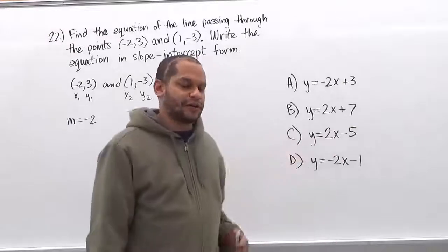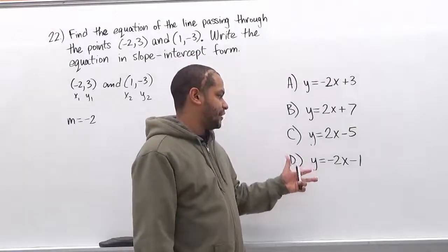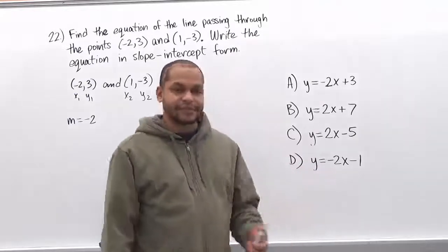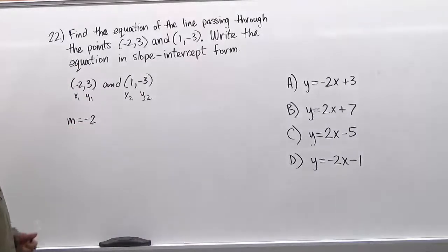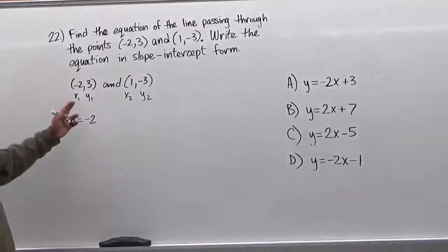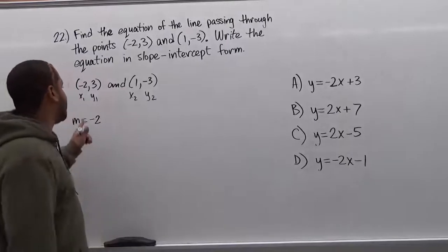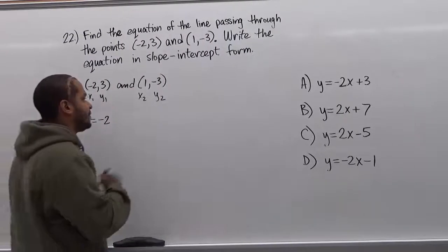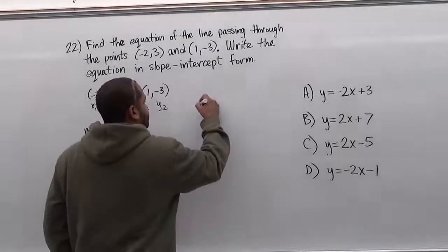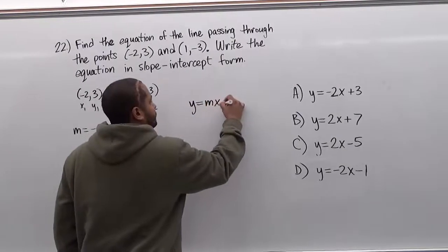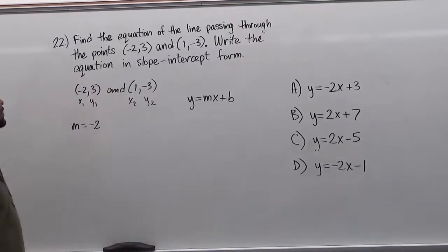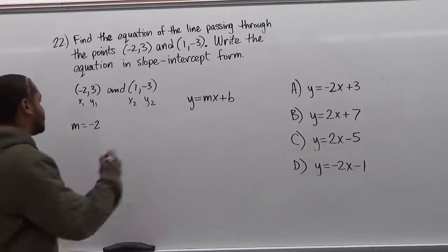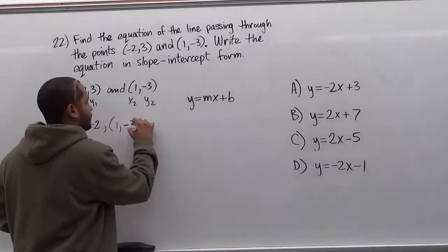From the first solution we found the equation using the point-slope form. This time we're going to use the slope-intercept form. We already found our slope as negative 2. We need to choose one of the two coordinates so that we can find the b term — the y-intercept. For the sake of argument, I'm going to use the second coordinate, which will give the same value as the first. So I choose x equals 1 and y equals negative 3.